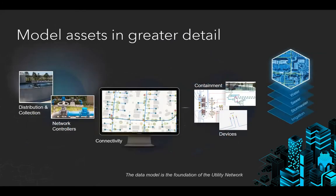When it comes to modeling assets in greater detail, the utility network's detailed data model and functionality allows utilities to model their assets in ways that previously were not possible. One example is using containers, where you can model features within other features — such as the pumps, valves, and meters within a pump station — allowing you to model your system in greater detail and track those assets' individual lifecycle and maintenance history. Containment also helps keep your maps looking clean, with the ability to hide detailed renderings at smaller scales within your maps.